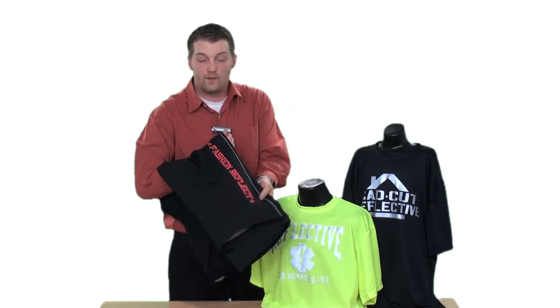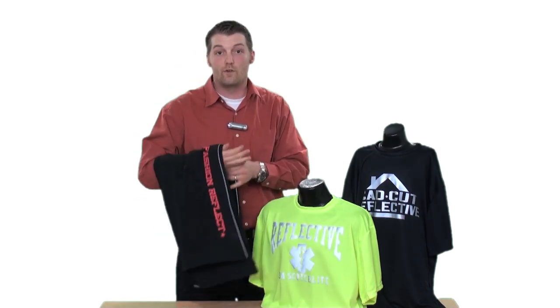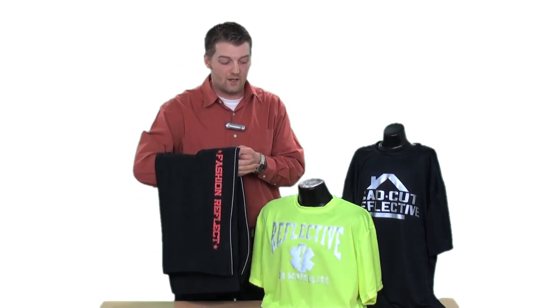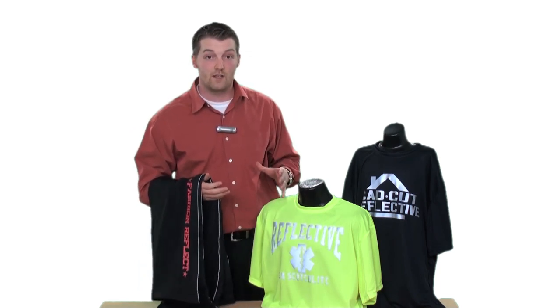We have the fashion reflective material that I'm holding here in my hand. This comes in ten different colors. It's very popular for pretty much any type of fabric. We've applied it to a pair of windbreaker pants here. We have the 3M Scotchlite Reflective which is our certified solution for safety. This particular product is on a high visibility performance wear garment.